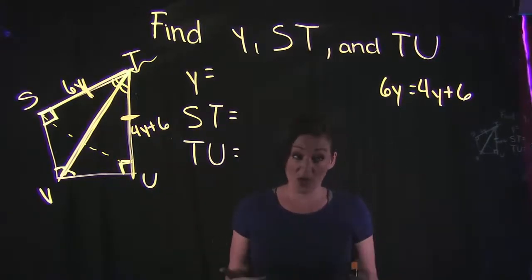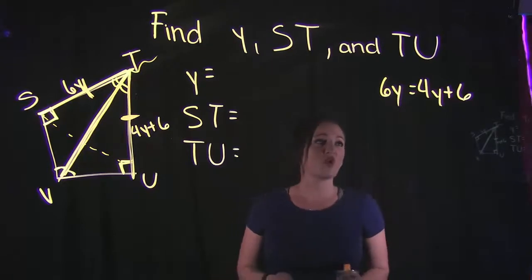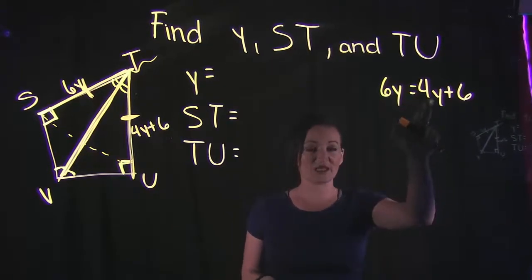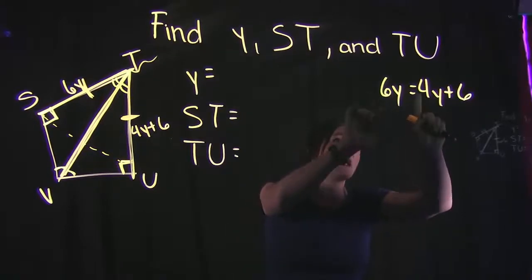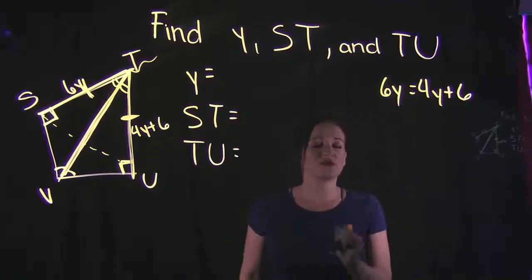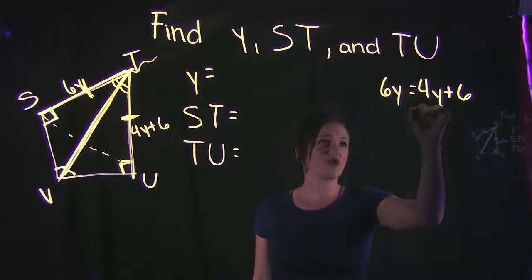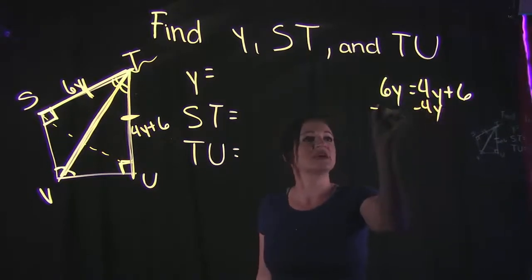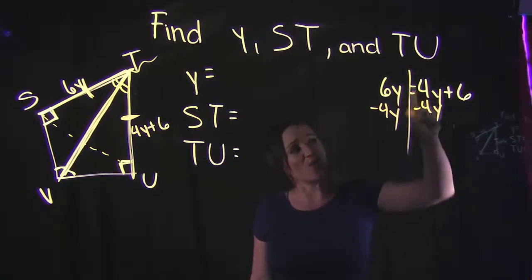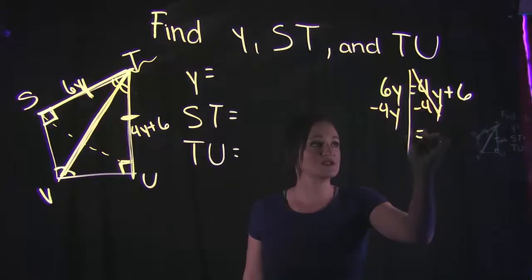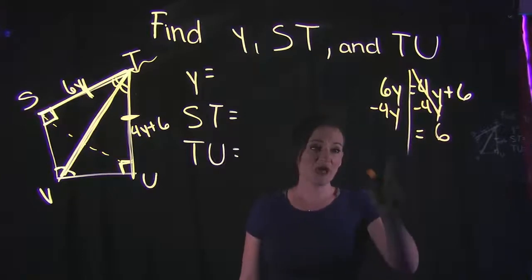Now, if I'm solving this equation, what I'm going to do is I'm going to take this 4y and move it over to the left-hand side, so I'm going to join my two variables together. Since this is a positive 4y, we need to do the opposite and subtract that 4y on both sides. On the right-hand side, 4y minus 4y cancels, leaving us with 6. And on the left-hand side, 6y minus 4y gives us 2y.